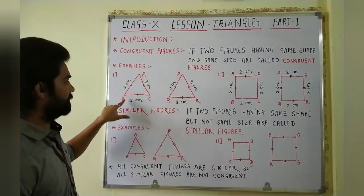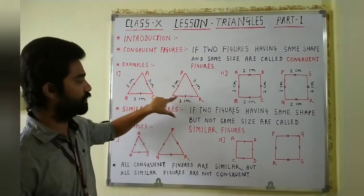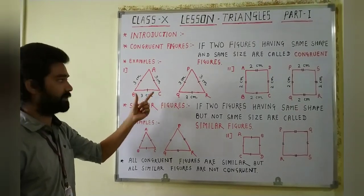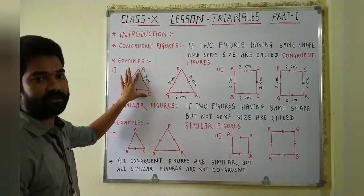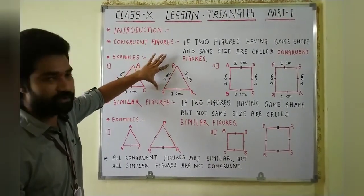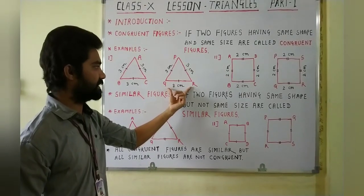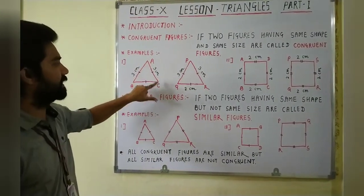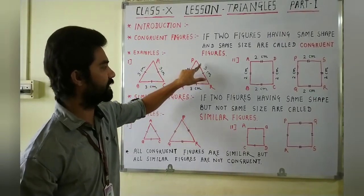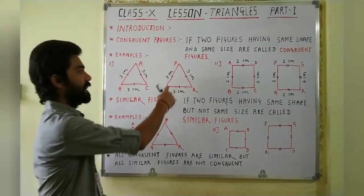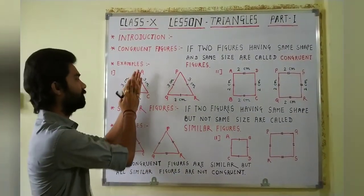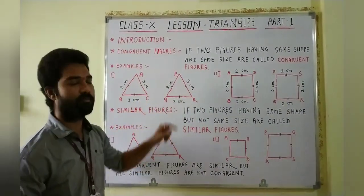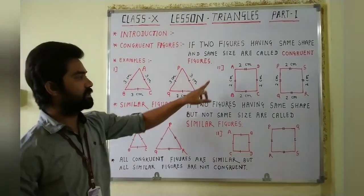Look at the given example. Here are two triangles: triangle ABC and triangle PQR. In triangle ABC, AB = 3 cm, BC = 3 cm, and AC = 3 cm. In triangle PQR, PQ = 3 cm, QR = 3 cm, and PR = 3 cm. All three sides of triangle ABC are equal to all three sides of triangle PQR. It means triangle PQR exactly overlaps with triangle ABC. That's why triangle ABC and triangle PQR are congruent triangles.